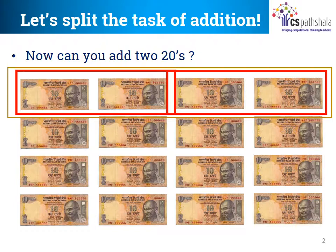Now, let's add them. What is 20 plus 20? That is right! It is 40. So, all the four notes add up to Rs. 40. Similarly, the next four 10 rupee notes can also be added to Rs. 40.